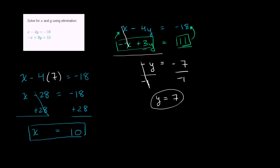And what's really good about this is you can verify them for yourselves. If you take this first equation, 10 minus 4 times 7, so 10 minus 28, does indeed equal negative 18. So it checks with the first equation. And let's check the second equation. So negative 10 plus 3 times 7, that's negative 10 plus 21, which does indeed equal 11. So it satisfies both of them.